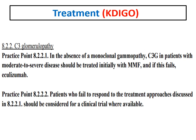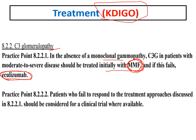Regarding treatment, according to KDIGO 2020, for C3 glomerulopathy in the absence of monoclonal glomerulopathy, patients with moderate to severe disease can be treated initially with MMF. If MMF fails to give a response, the second option is eculizumab. If the patient does not respond to both, enrollment in a clinical trial where available is recommended.